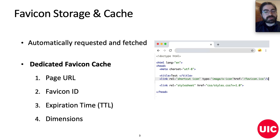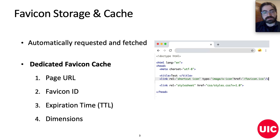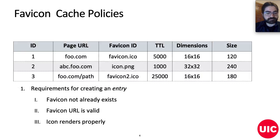This cache stores different values that include the page's URL, the favicon ID and name, and other meta information like the expiration time and the favicon's dimensions. There is also a set of rules that defines how browsers can use and access this cache. The first policy defines the requirement of creating a new entry: on every page visit, the browser looks up for a favicon in the cache.